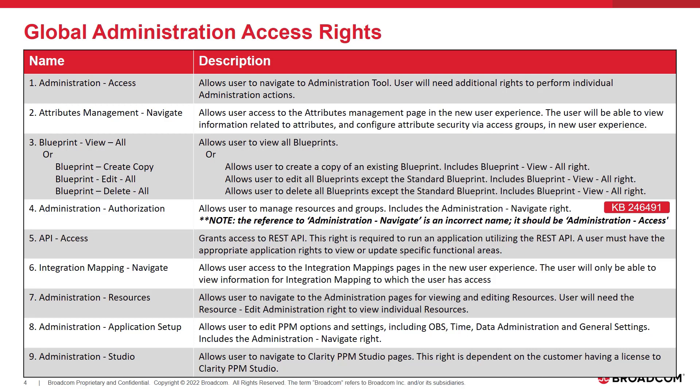Note, at the time of this recording, there is one outstanding issue reported to engineering to correct the description for the administration authorization access right. I will cover the details on the permissions the user gets for this right. Refer to the associated knowledge base article number 246491 for specific details and to follow the progress on the resolution of the issue described.